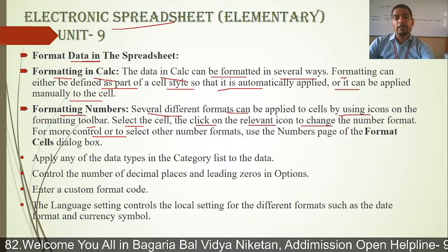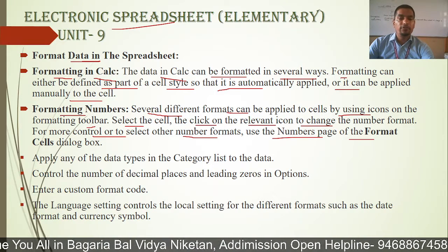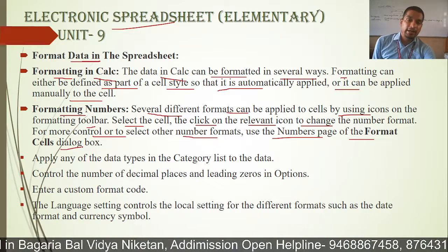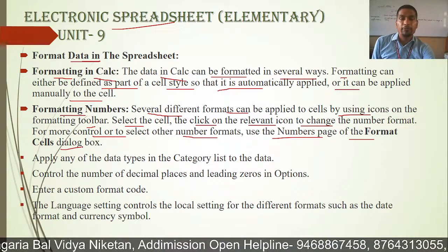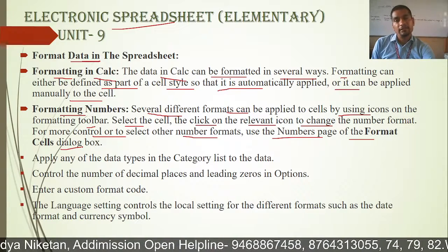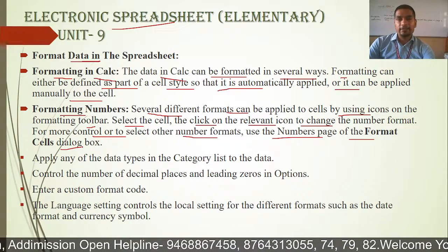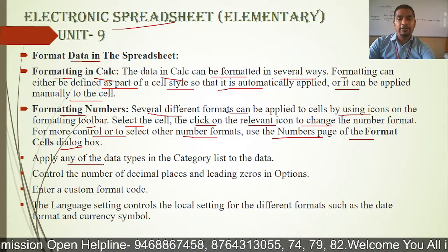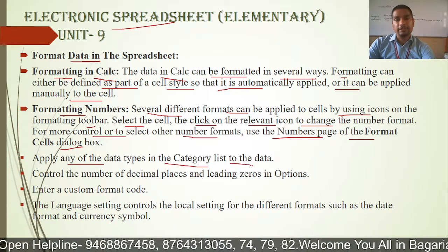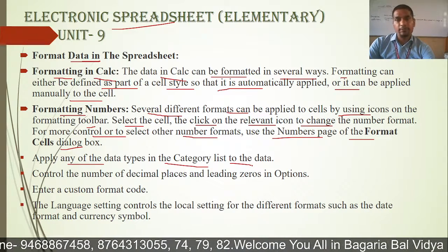For more control and to select other number formats, use the number page of the format cell dialog box. You will get the number page of the format cell dialog box where you can apply any of the data types in the category list to the data. You can show the data type according to your data.